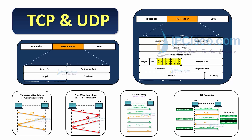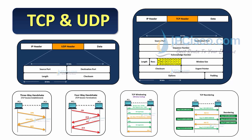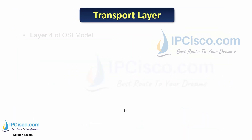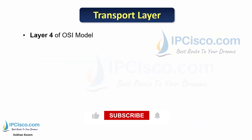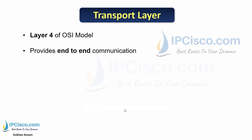In this lesson, we will learn the differences between TCP and UDP. We will focus on each transport layer protocol and learn the details of them. First of all, TCP and UDP are transport layer protocols. They work at layer 4 of the OSI model. Transport layer provides end-to-end communication in computer networks.